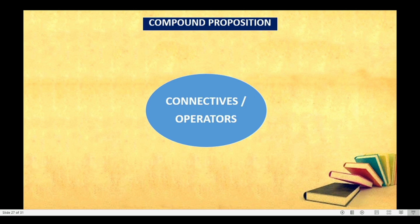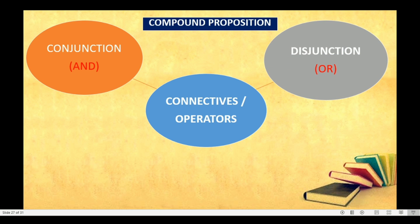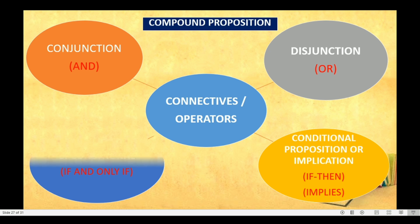Four connectives. First, we have the conjunction, which uses 'and.' Second, we have the disjunction, or 'or.' Third, we have the conditional proposition — another name for it is implication — which uses the if-then statement, or 'implies.' And fourth, we have the biconditional proposition. Each compound proposition has its own truth table because they have their own operation. So let's discuss the truth table of each compound proposition.